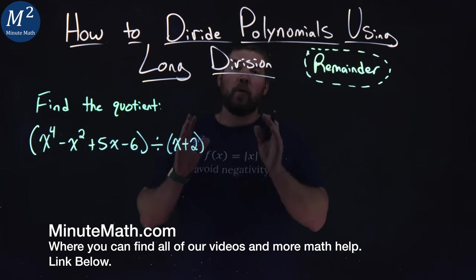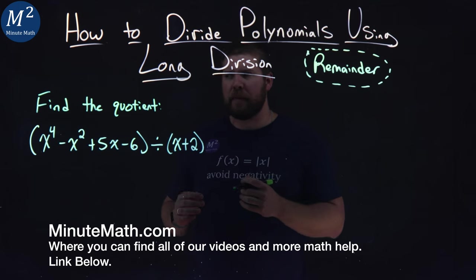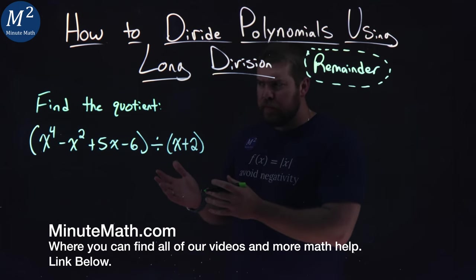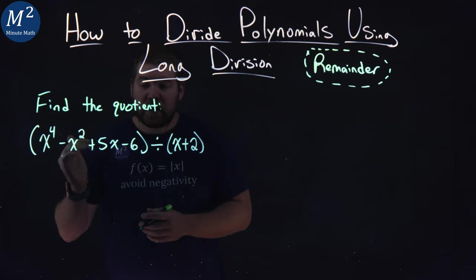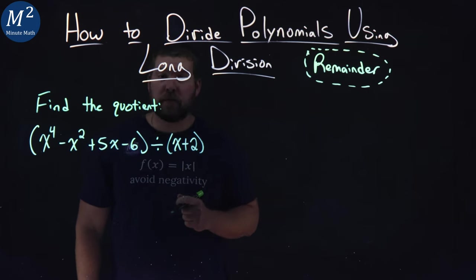Our problem here will have a remainder at the end, and I'll show you how to deal with that when we get there. We have this problem: x to the fourth minus x squared plus 5x minus 6 divided by x plus 2.